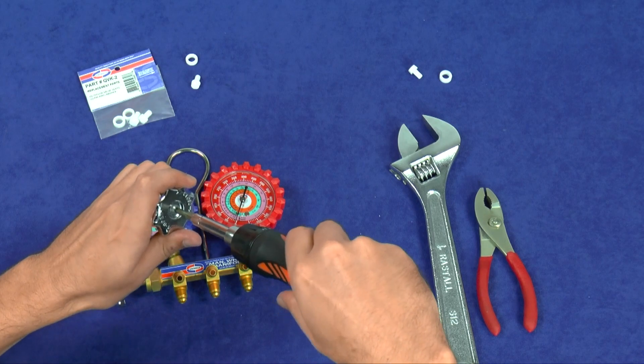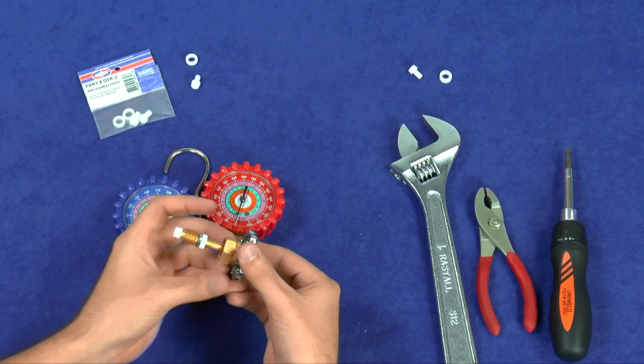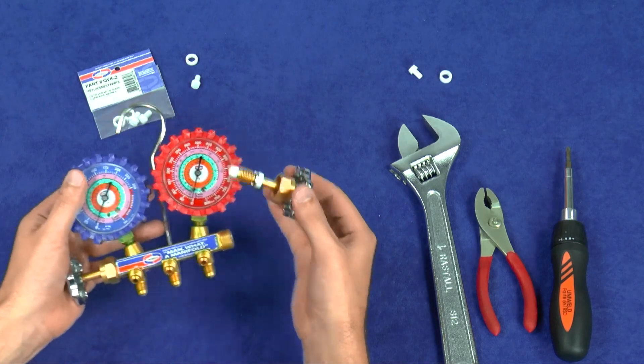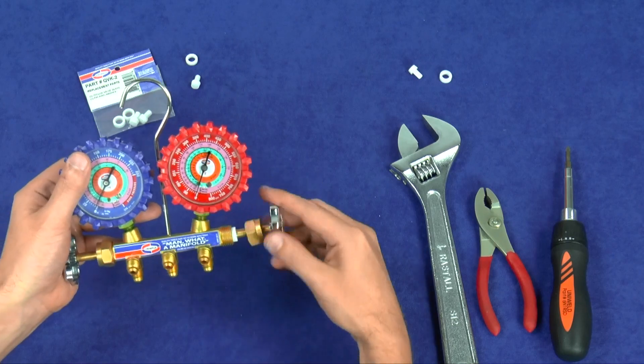Once the Teflon seat and packing washer have been replaced, the valve stem assembly can be reattached to the manifold body by turning the metal hand wheel clockwise. Then, tighten the brass packing nut on the manifold body for a complete seal.